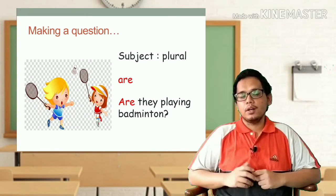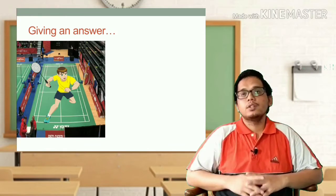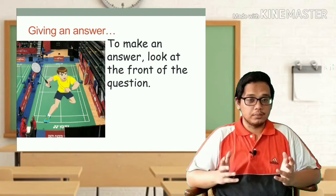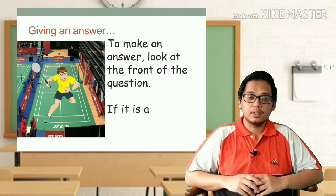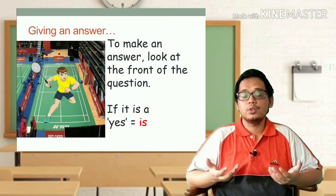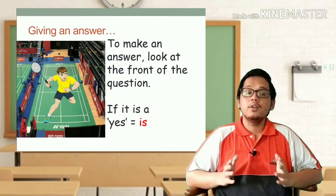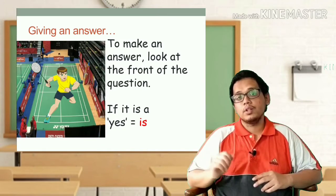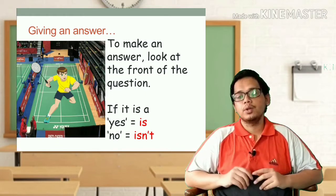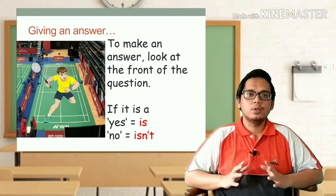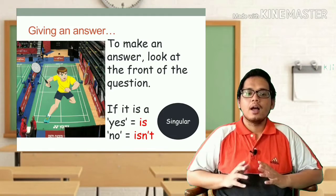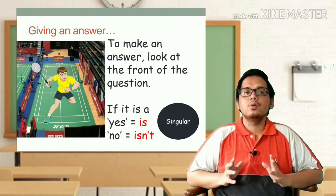Now for the next part, I will teach you how to give an answer. To give an answer, we must look at the front of the question — for example, is it 'is' or is it 'are'? When we want to give an answer, we have to answer yes or no first. If it is a yes, then we must come with 'is' at the back. If it is a no, we must come with 'isn't' at the back.